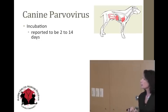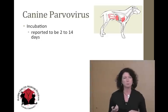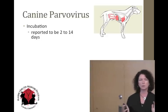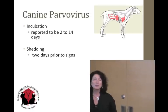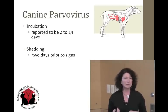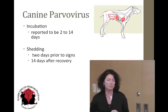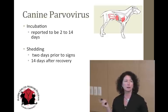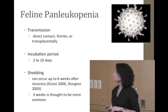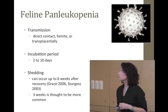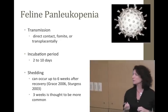Incubation and shedding periods are your key numbers in an outbreak. Parvovirus incubation from infection to showing signs: between 2 and 14 days, though average is probably 5 to 7. Shedding can begin 2 days prior to signs in dogs — very tricky because they're shedding without showing illness — and continues up to 14 days after recovery. Panleukopenia has a slightly shorter incubation of 2 to 10 days, and shedding can occur up to 6 weeks after recovery, though 3 weeks (21 days) is more common on average.